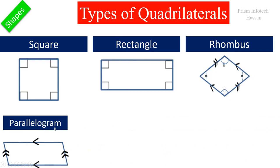Next one is a parallelogram. In this shape, opposite sides are parallel and opposite angles are equal.